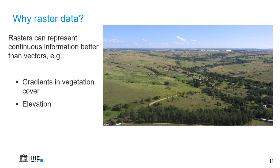What we cannot represent in vector are physical properties of the landscape that gradually change over the landscape — for example, vegetation cover gradients or elevation gradients. Raster data is much better at representing gradients in the landscape, so representing continuous data.